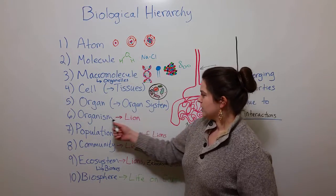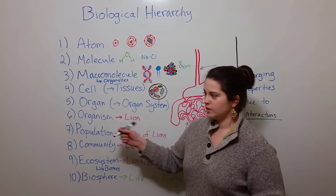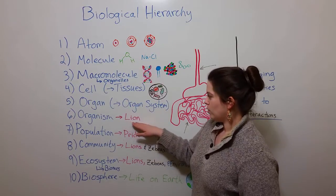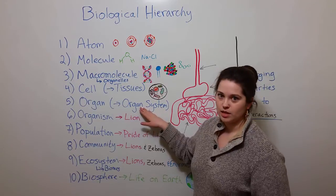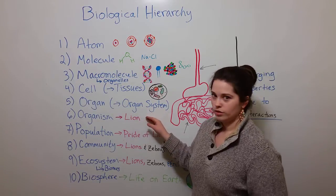The organ systems come together to make organisms. For example, here we can say that a lion is an organism. And a lion is made up of multiple organ systems that allow the lion to survive.